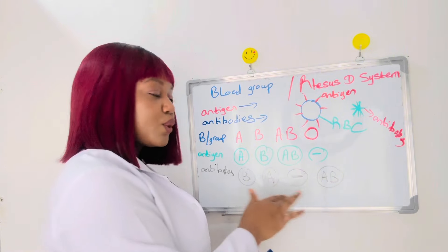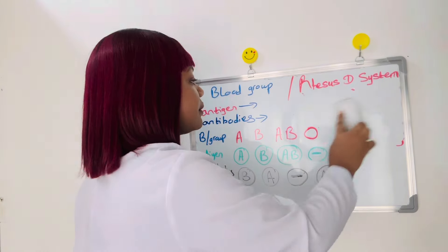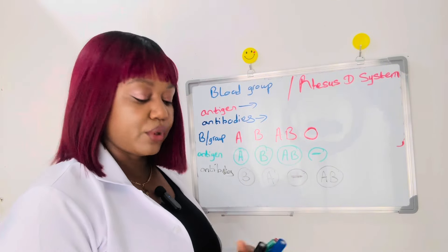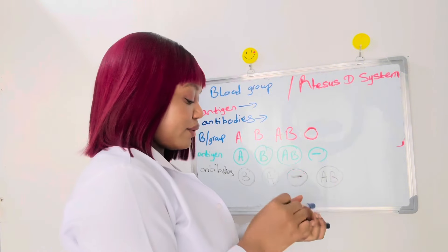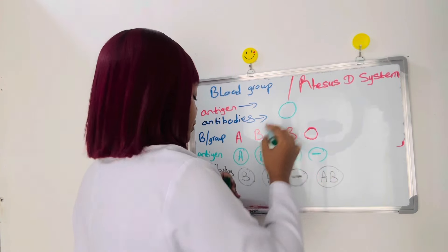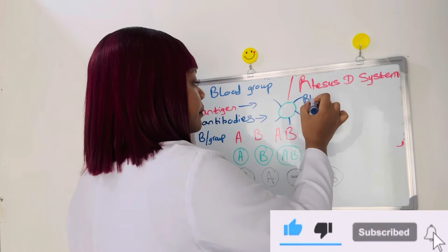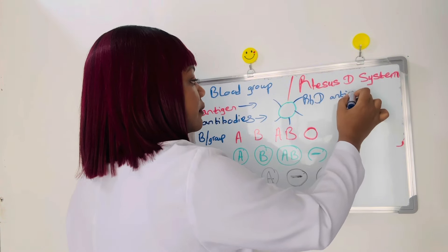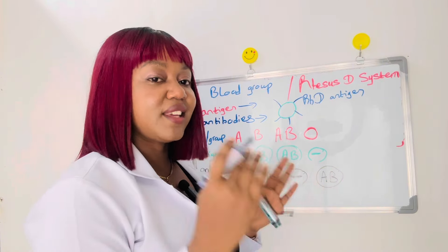So those are the simple differences in the ABO system. Now when it comes to the Rhesus factor: there are different types of antigen present on the red blood cell, and the Rhesus D factor is another type of antigen present on the red blood cell. You can be Rhesus D positive or Rhesus D negative.